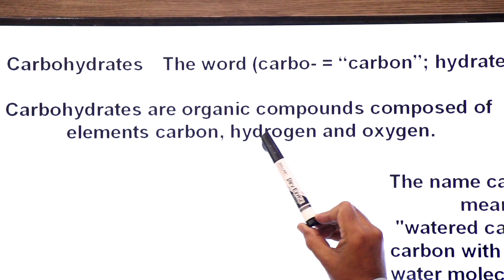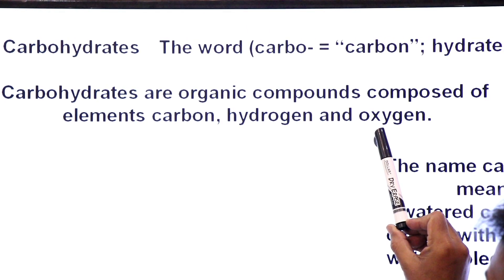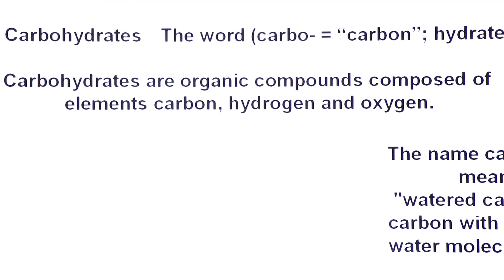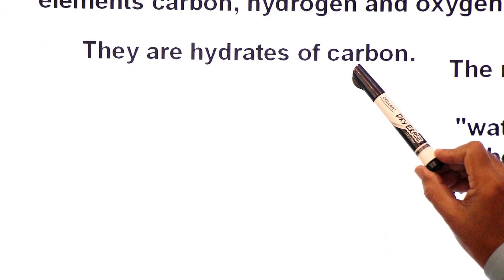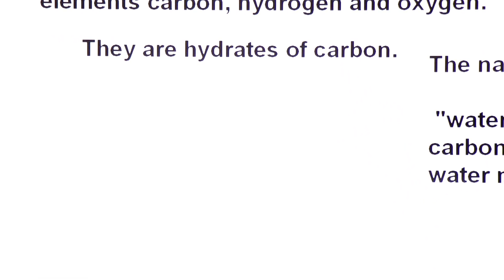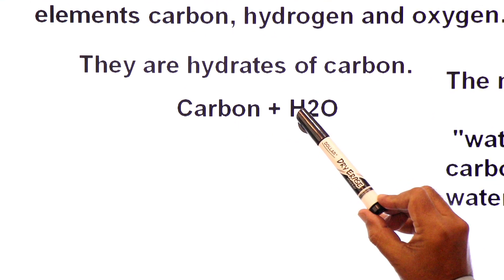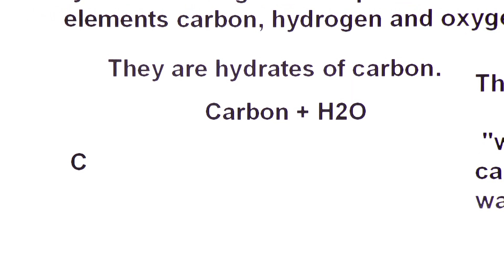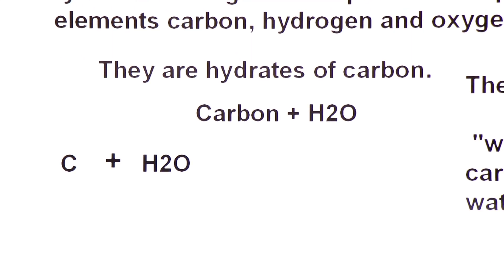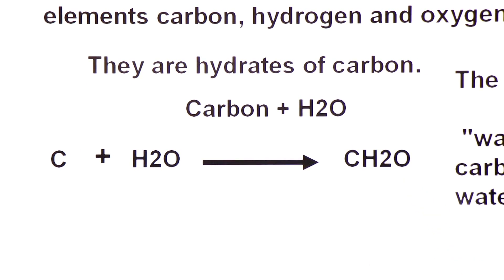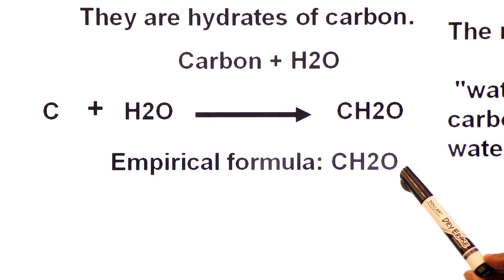Carbohydrates are organic compounds composed of three elements: carbon, hydrogen, and oxygen. As the name tells us, they are hydrates of carbon. If we attach water to carbon, a hydrated carbon is formed. When we take carbon and add water to it, the formula that results is CH2O — this is an empirical formula.